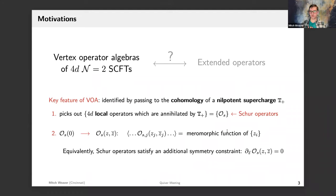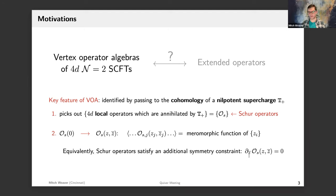The VOA is identified by passing to the cohomology of a particular nilpotent supercharge, which I'll call T-plus. There are two major consequences. First, passing to the cohomology of T-plus picks out the set of 4d local operators annihilated by T-plus — the so-called Schur operators, denoted O_S. Second, when we translate a Schur operator in a particular way, their correlation functions depend meromorphically on their z insertions — equivalently, Schur operators satisfy the additional symmetry constraint that their del-z-bar derivative is zero.